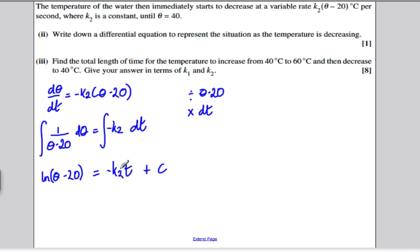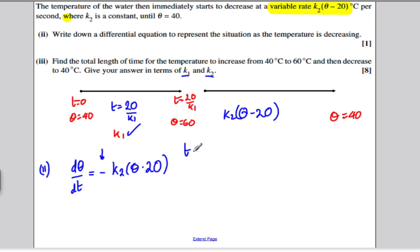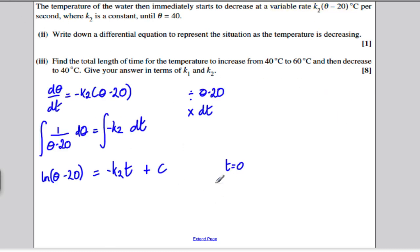Now, we want to find t, so let's use some boundary conditions. We know that when t is 0 in the second stage here, I'm going to say t is again 0 here in this second process. When t is 0, we know that theta was equal to 60. So sub that all in, sub in t is 0, this disappears, sub in theta is 60, we get ln 40 here. This tells us that c must be ln of 40.